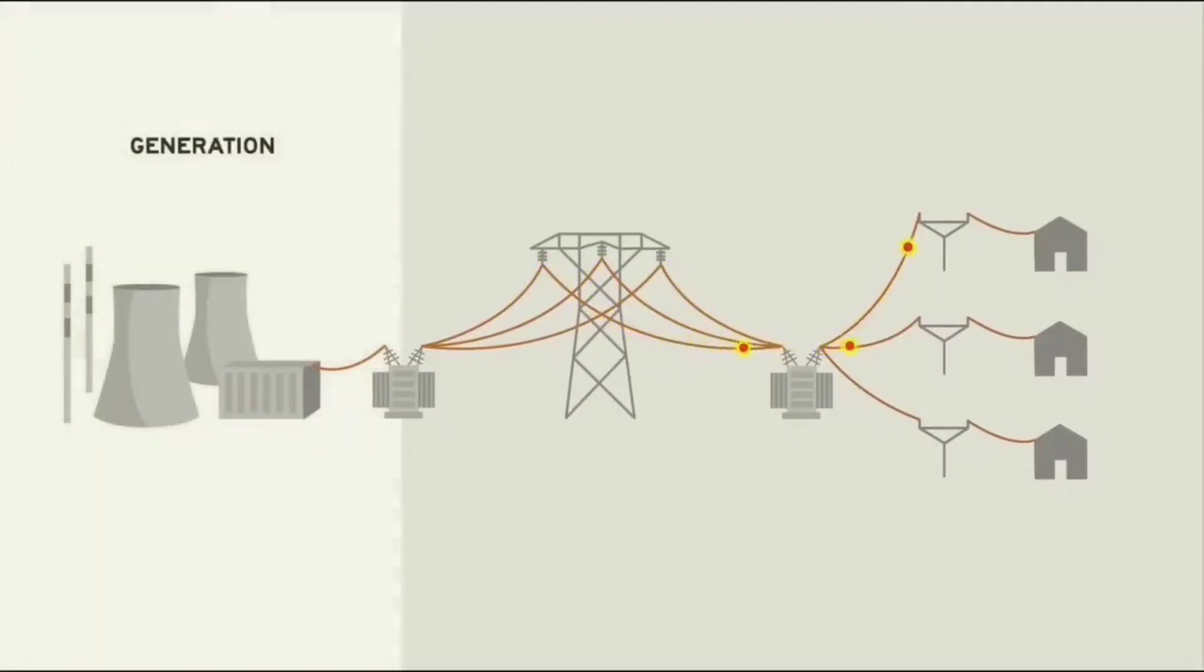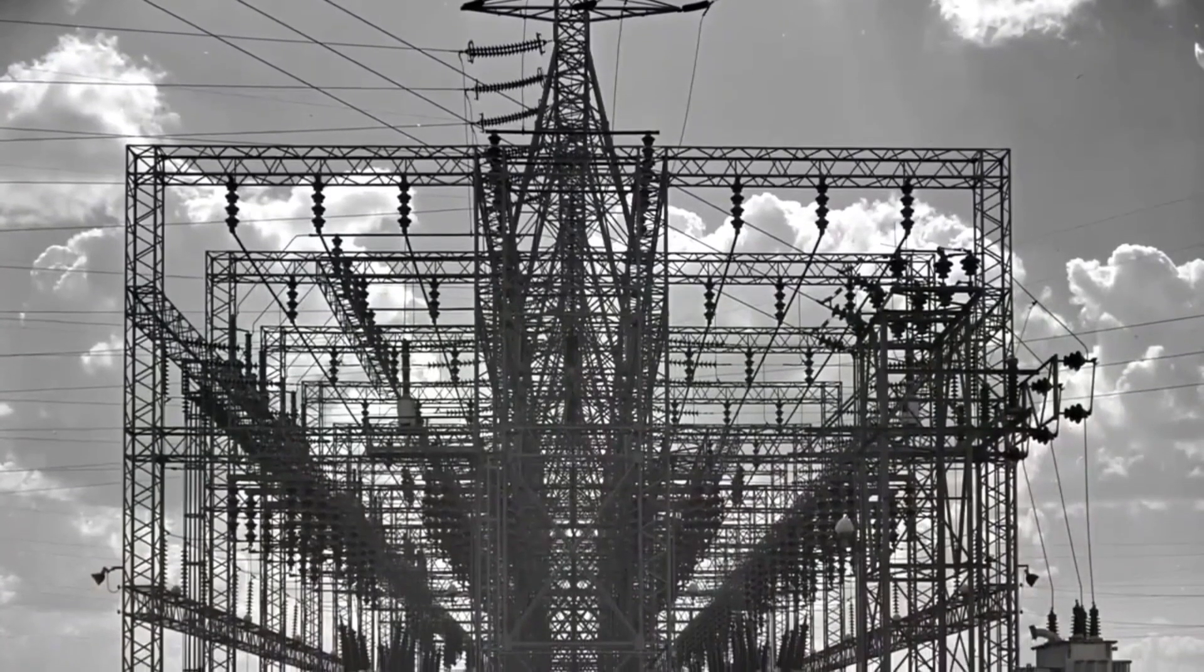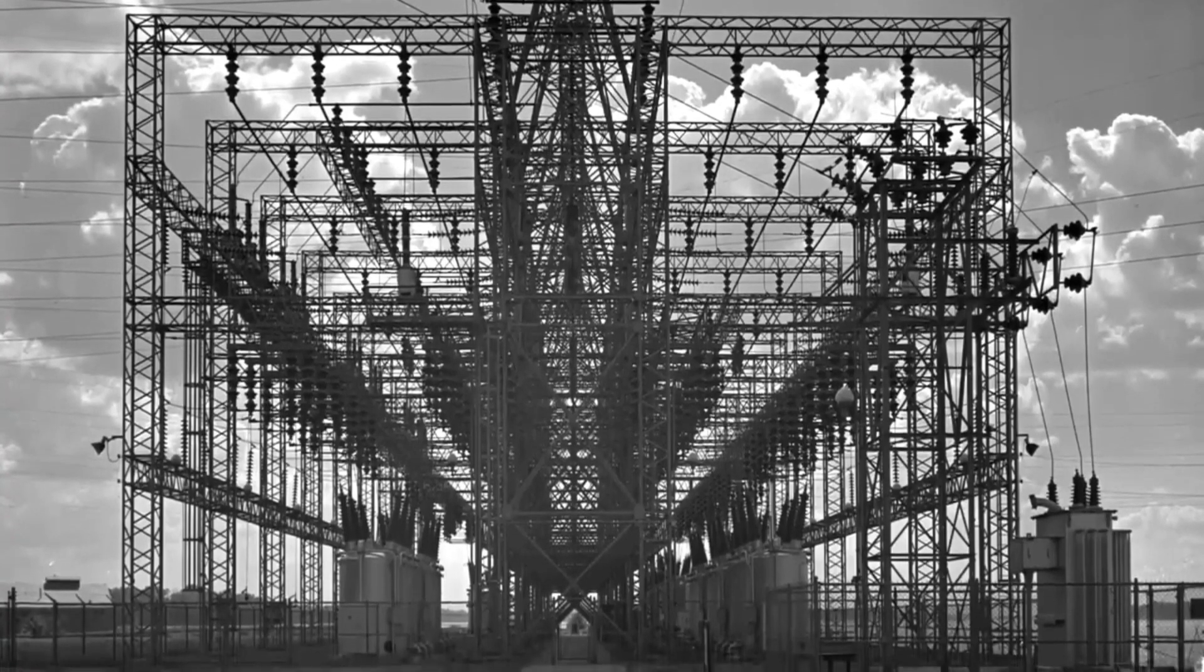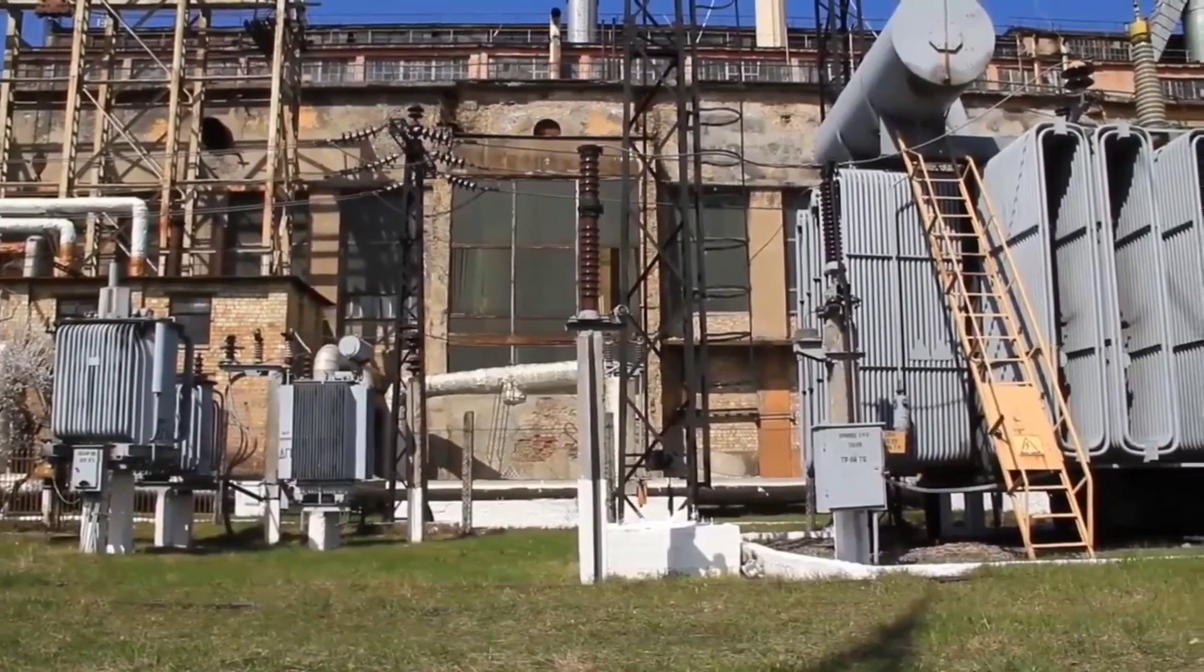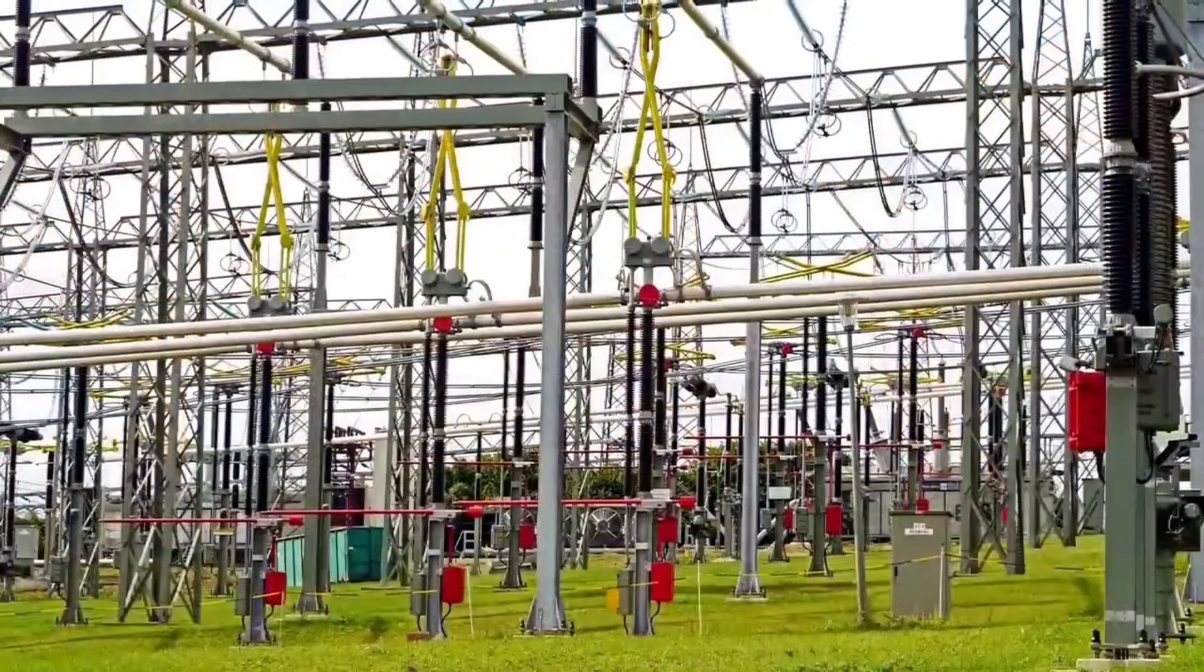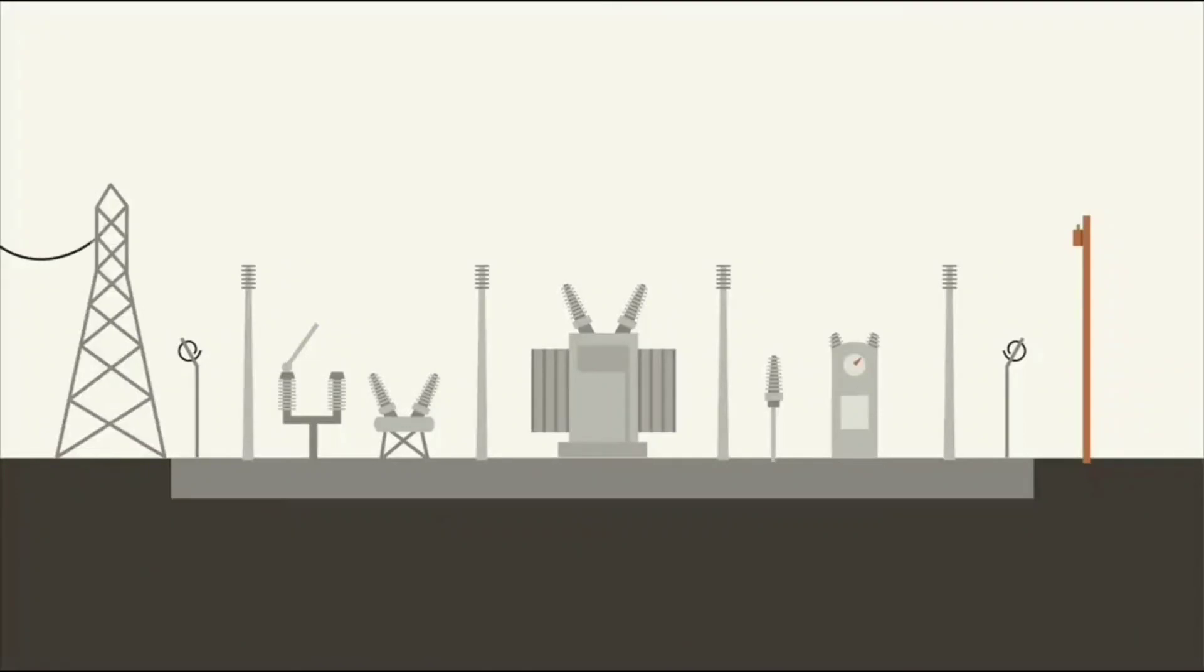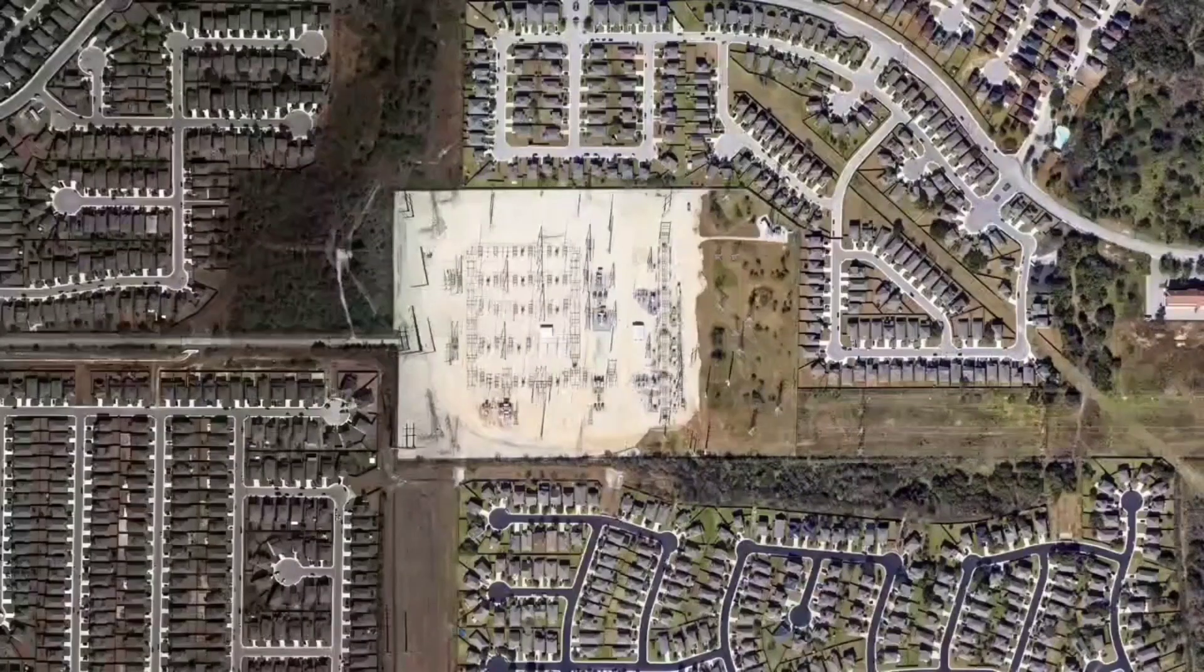There are three stages: the first is generation, the second is transmission, and the final one is distribution. The power grid involves substations, electric lines, high voltage conductors, and many pieces of equipment to connect them all together.